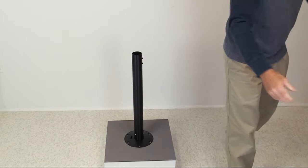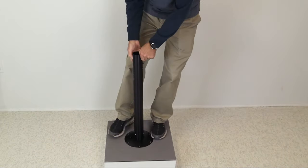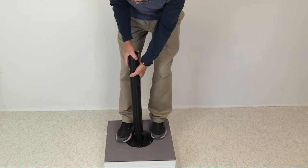Remove the tabletop, push in the release tab on the floor base, and twist the leg counterclockwise until loosened.